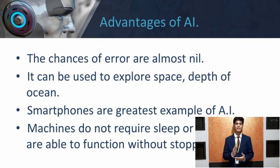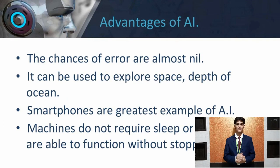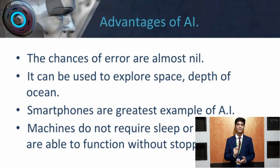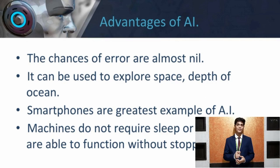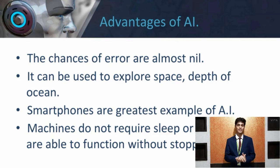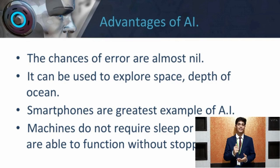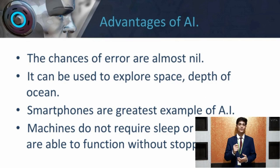Our next topic is advantages of AI. First point: the chances of error are almost nil. Computers do not make any mistakes if they are programmed properly. With AI, decisions are taken from previously gathered information applying a certain set of algorithms, so that errors are reduced and the chances of accuracy are greater. For example, in weather forecasting, using AI reduces the majority of human error.